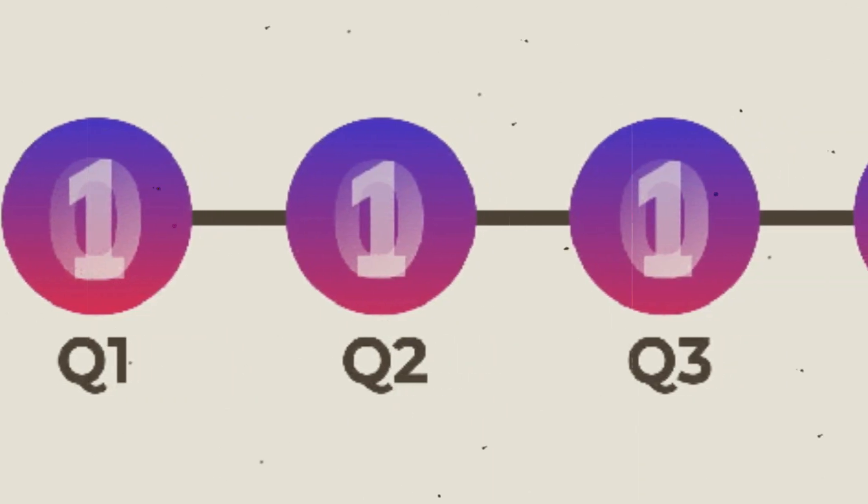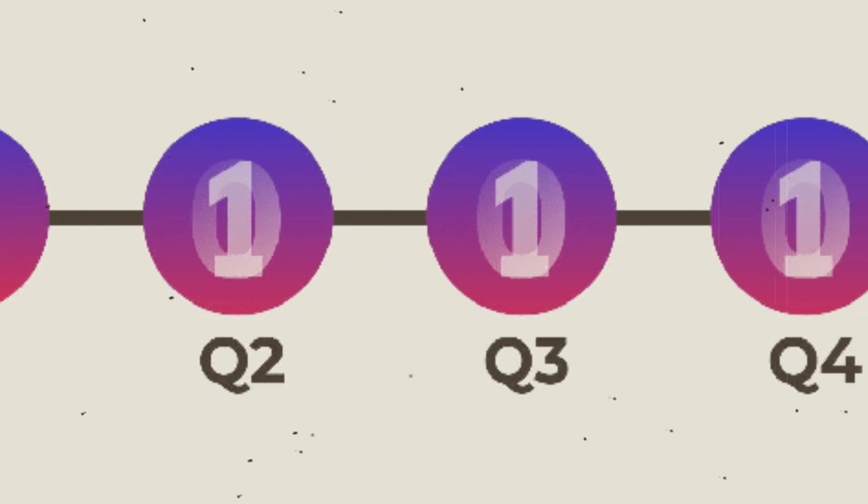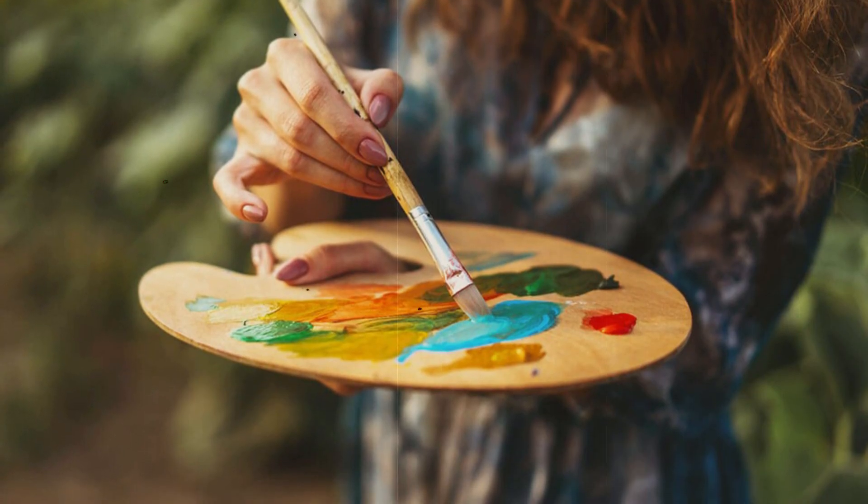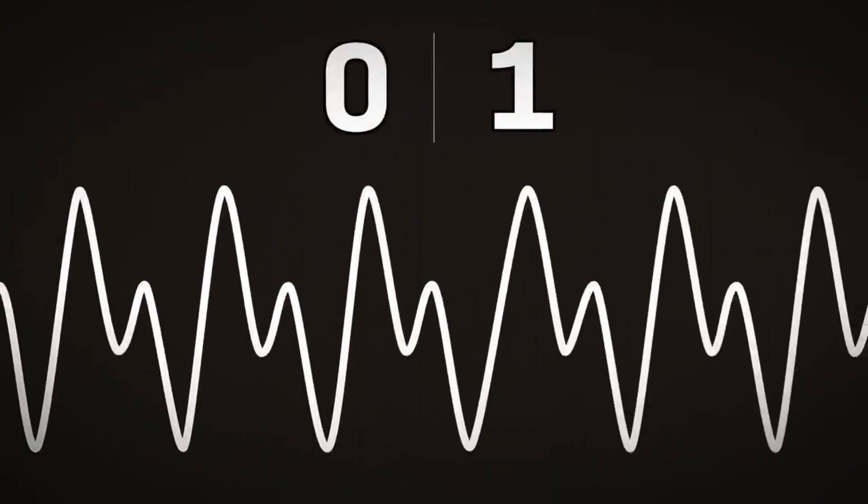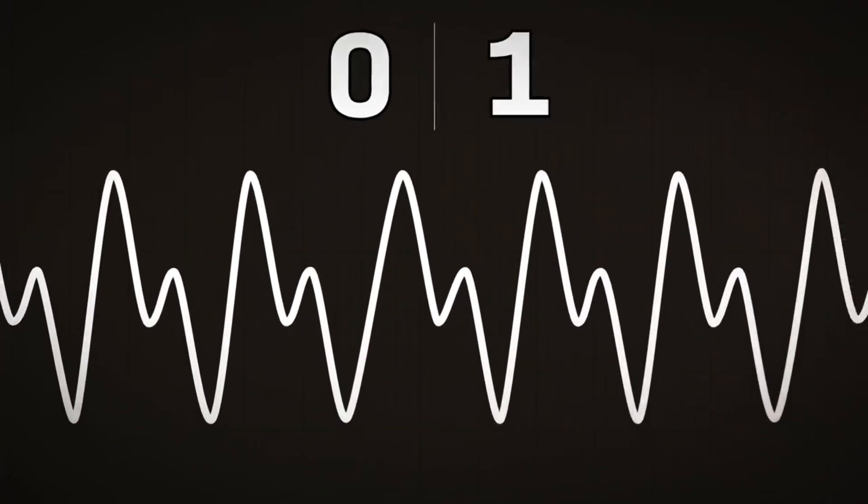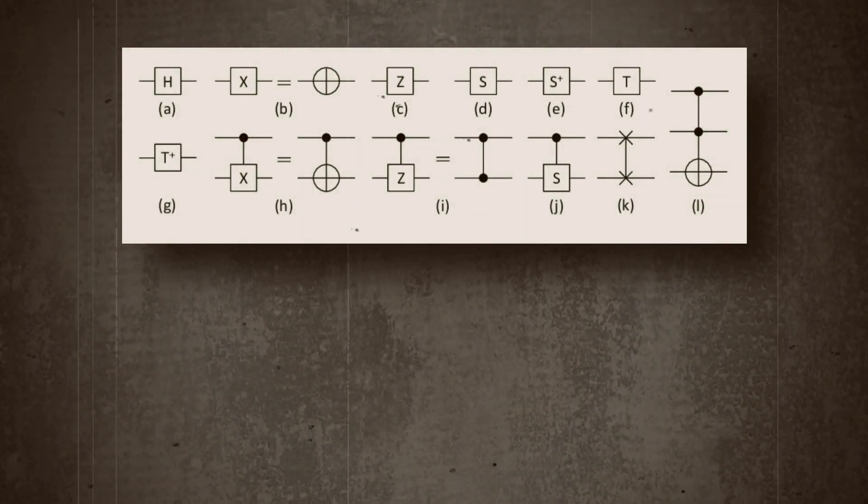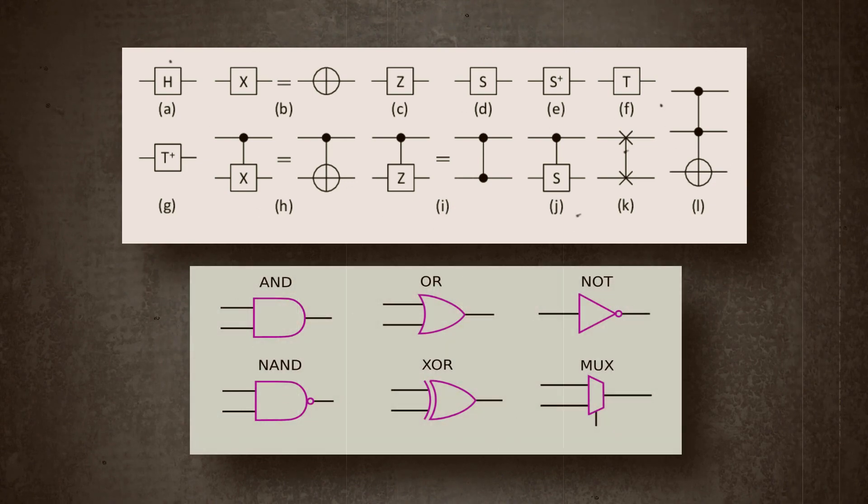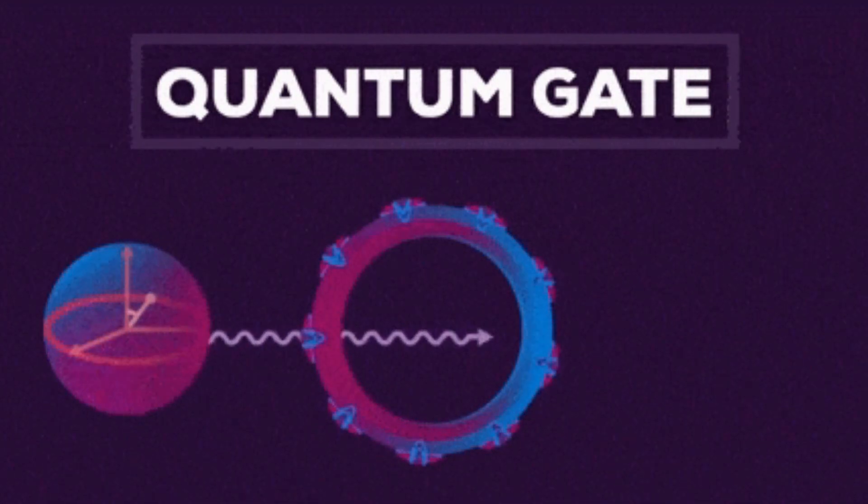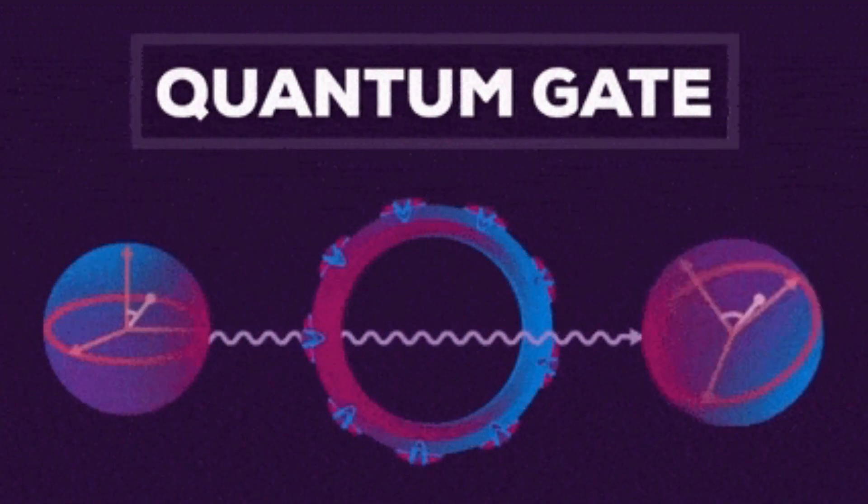These qubits and their superposition represent a spectrum of possibilities, like an artist's palette holding an array of colors, ready to paint an infinite number of pictures. Now it's time for some quantum operations, the crux of quantum computation. These operations are performed using quantum gates, akin to the logic gates in classical computers. Yet these are no ordinary gates. They manipulate the qubits in ways that are impossible in classical computing.